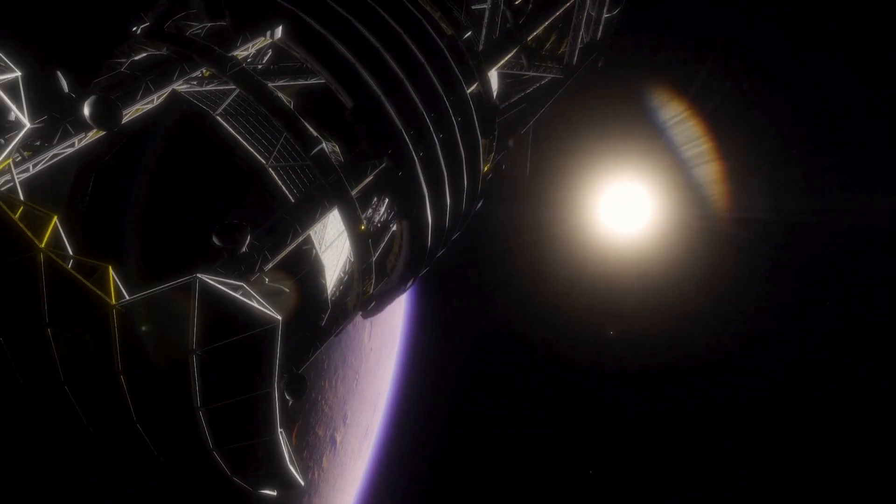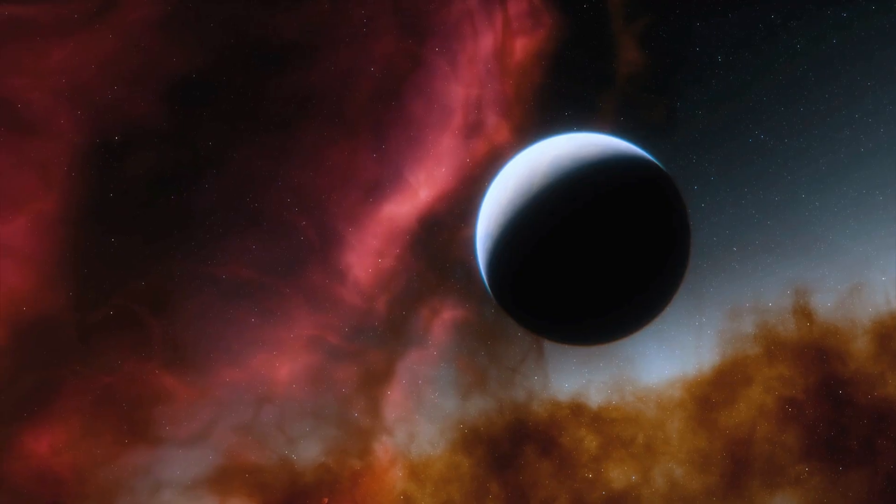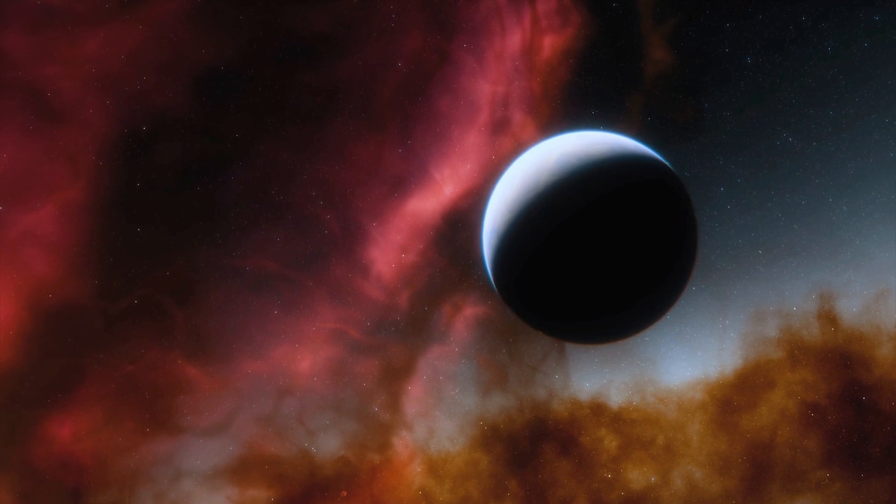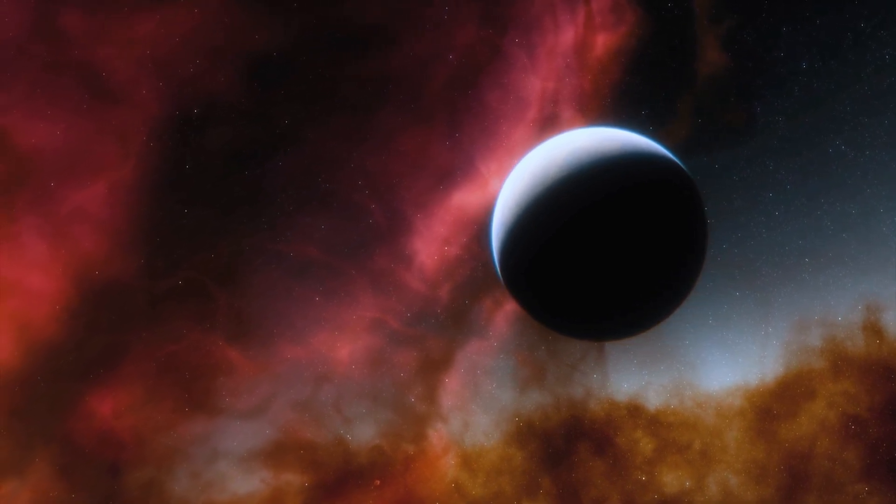The James Webb Telescope has just unveiled the clearest image of Proxima b in history, revealing astonishing details about this potentially habitable exoplanet. Join us as we embark on a journey through space to uncover the mysteries of Proxima b and discover whether it could be the next Earth.